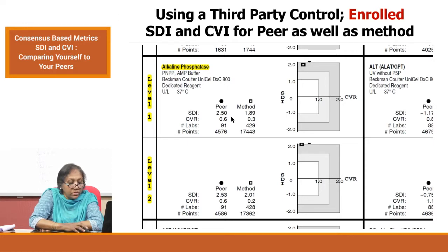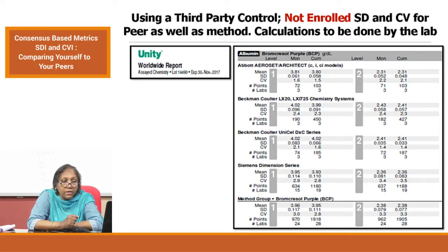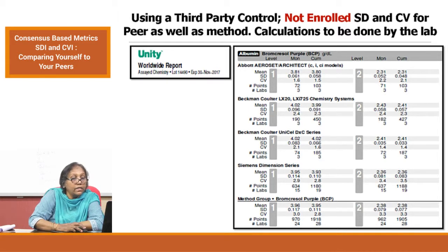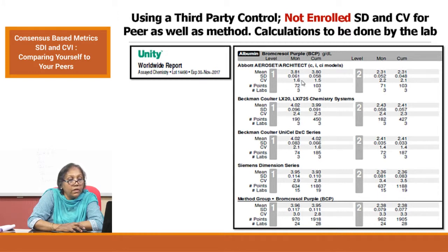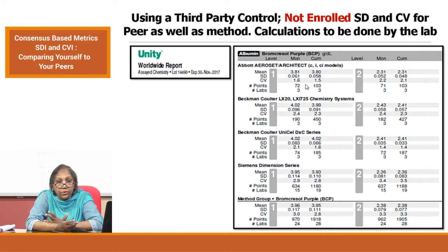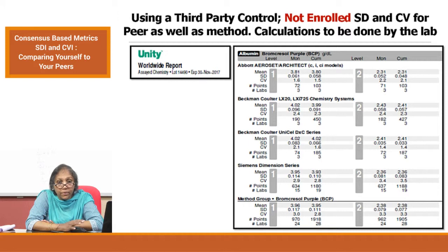Another option: if you have not enrolled directly, you can ask your QC provider to make the peer group report available on request, as some providers commit to this. If you receive such reports, you can calculate your own SDI and CVI, since they provide the peer group mean for the month, the cumulative peer group mean, standard deviation, and CVs — and you already know your own lab statistics. These worldwide reports are made available through some IQC programs, so please look into these options while signing up for your IQC program.